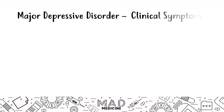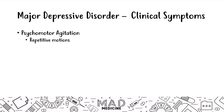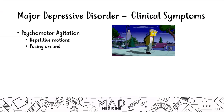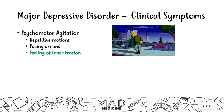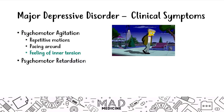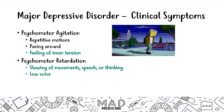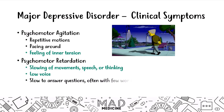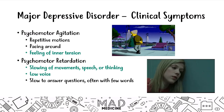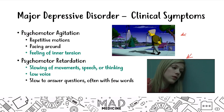Other clinical symptoms include psychomotor agitation. A lot of these patients end up having repetitive motions — they may be pacing around a lot, they may not feel comfortable, and they may feel inner tension, like something is going on inside them that they can't fix. Patients may also have psychomotor retardation, which is the opposite. They may feel like everything is slowing down — they talk slowly, think slowly, have a very low voice and flat affect, are slow to answer questions, and respond with very few words.